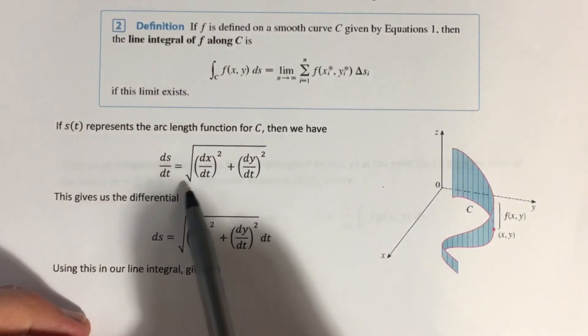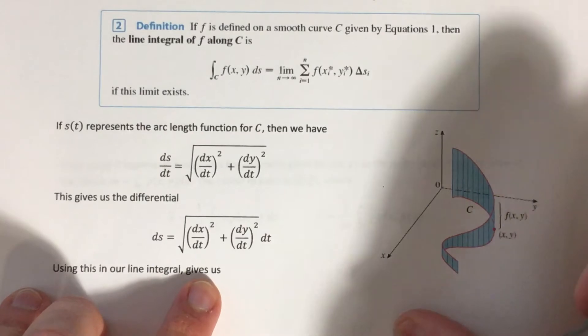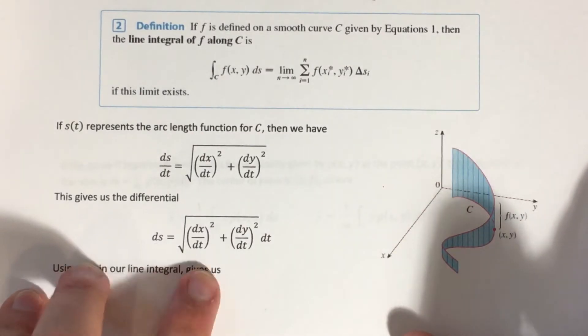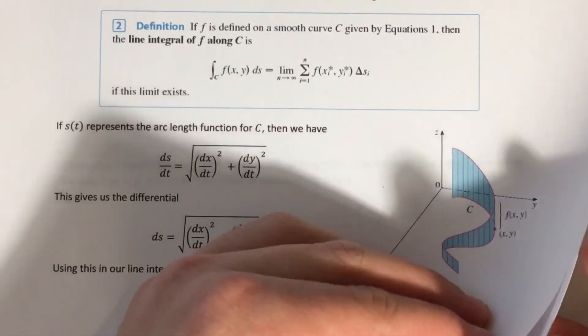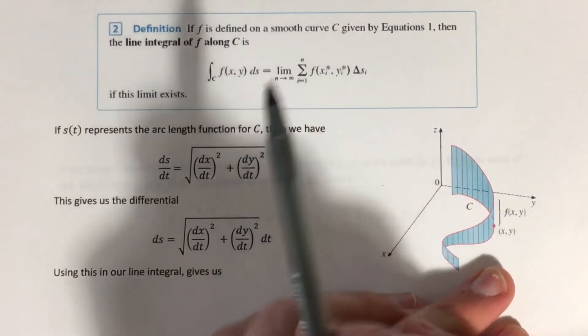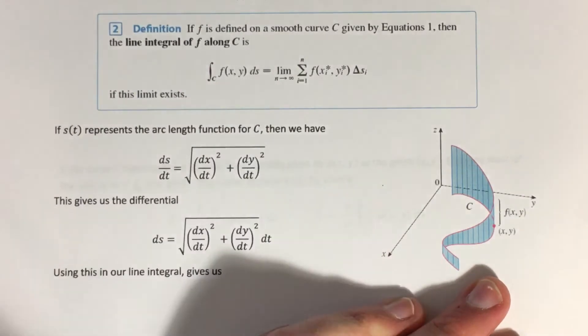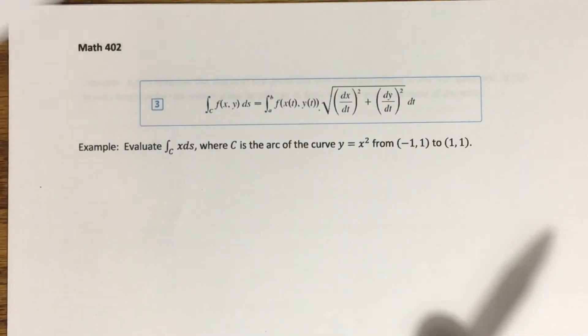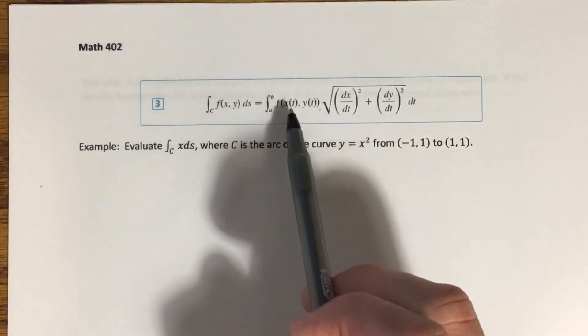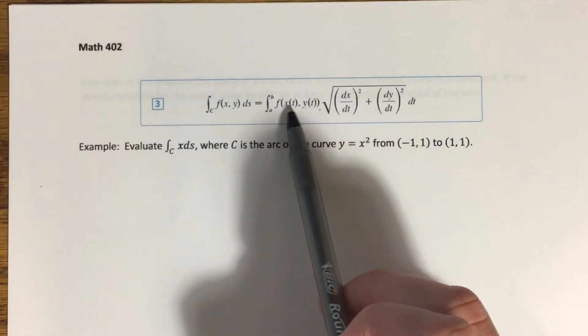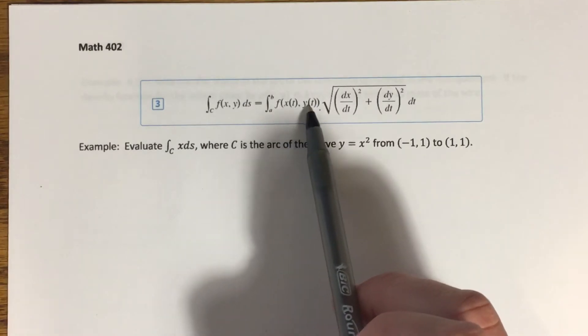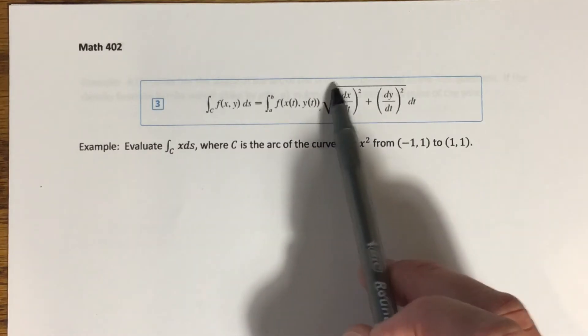Again, we came up with the differential ds equals square root of dx dt squared plus dy dt squared dt, and substituting that in for the ds here, as well as substituting in x of t and y of t from our parametrization in for the x and the y here, gives us this formula here for computing a line integral. So if you notice, the things that we need are a parametrization for our curve, which is where x of t and y of t come from, the derivatives of each of these functions with respect to t, which will be used here.